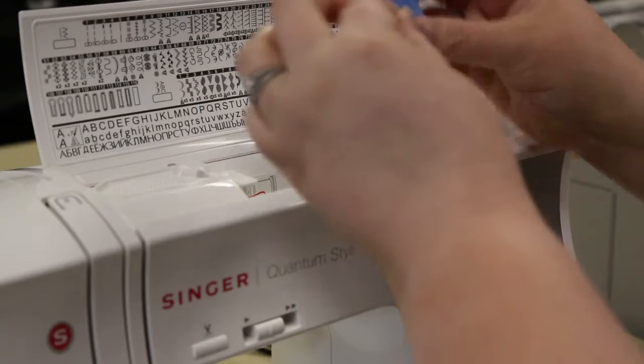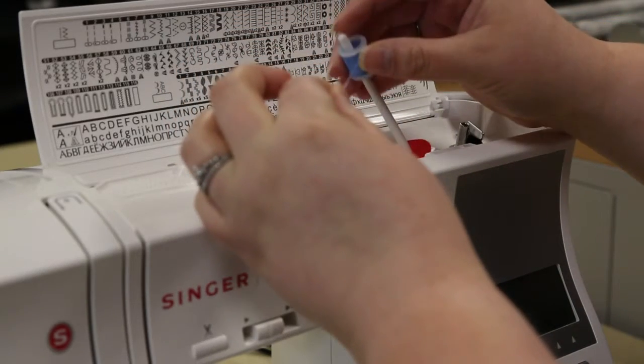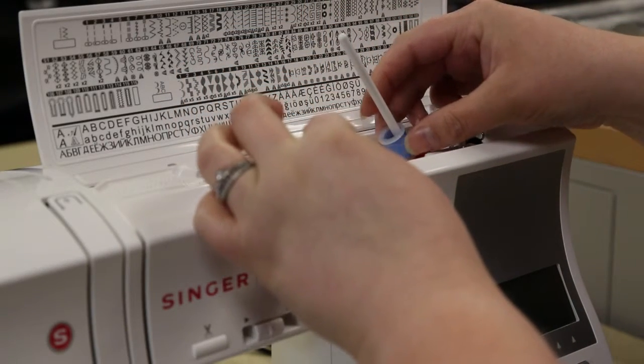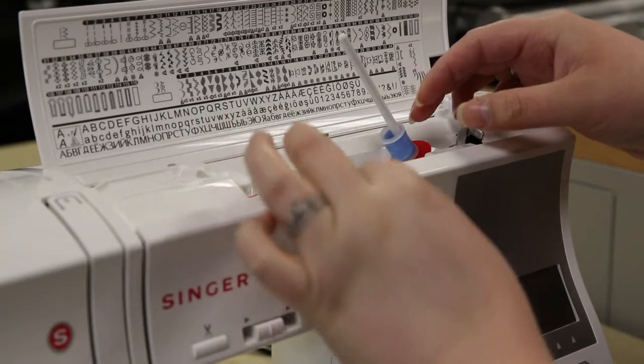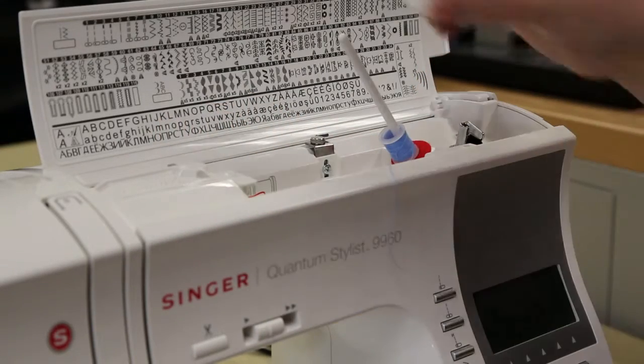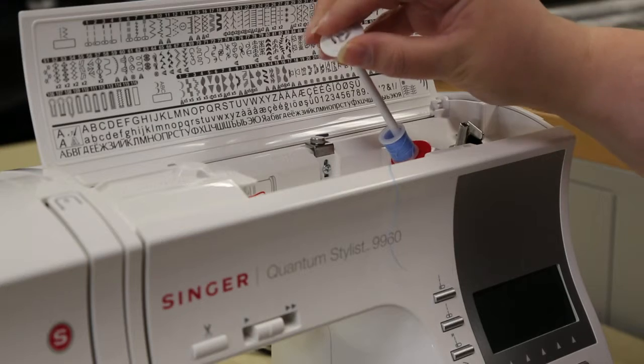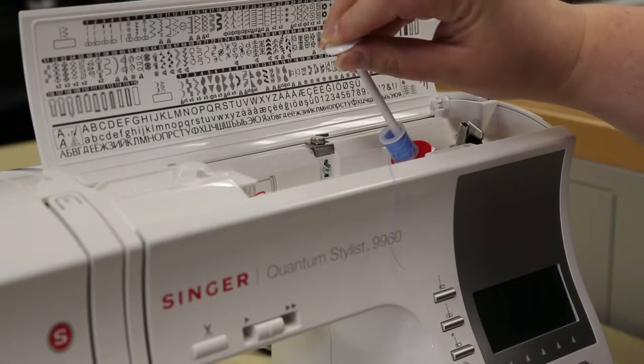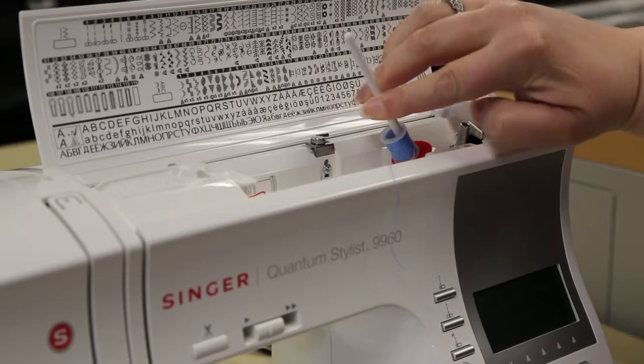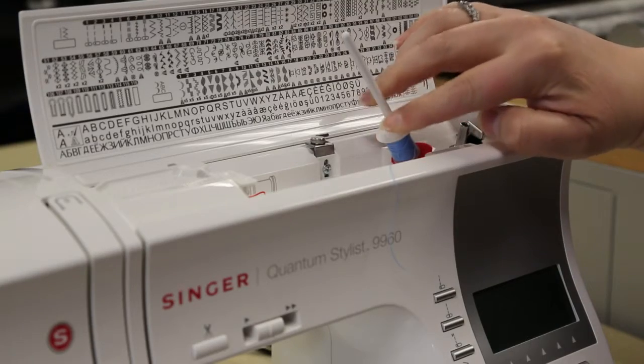To start, first wind the bobbin. Start by pulling up the left end of the spool pin. Set the spool of thread on the spool pin so that the thread unrolls from the front of the spool. Next, set the correct size of spool cap on the spool pin and secure it to the top of the spool.